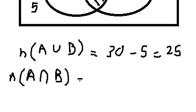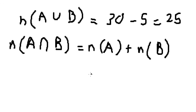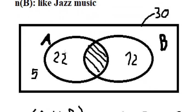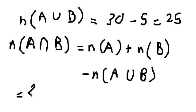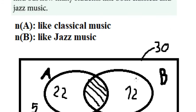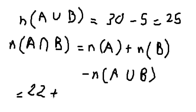We have n(A) plus n(B) minus n(A union B). So we know that n(A) we have 22, and B that's about 12, minus 25.